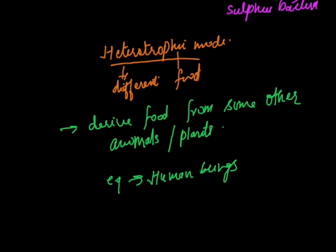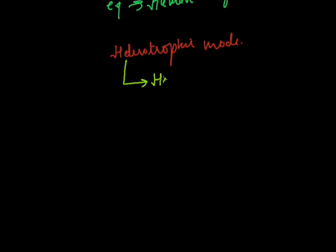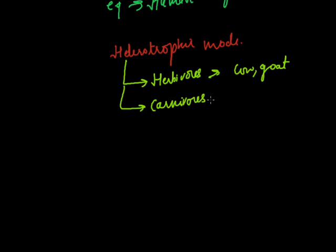Heterotrophs are further categorized depending on the nature of food they consume. The first category is herbivores — animals which eat only plants, common examples being cow and goat. The second category includes carnivores, which feed on the flesh of other animals, like lion and vulture.